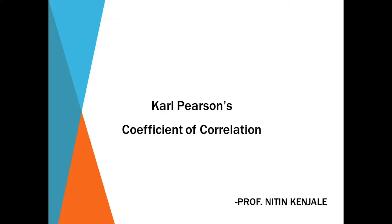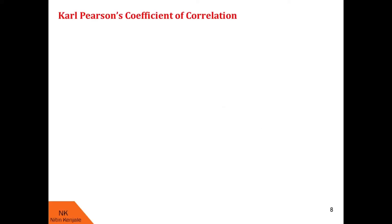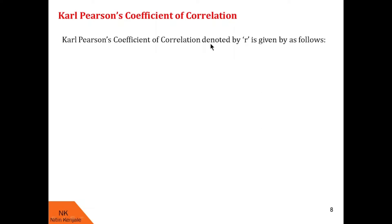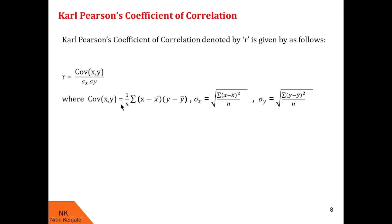Let us first see the formula to find the coefficient of correlation using this method. Karl Pearson's coefficient of correlation is usually denoted by small letter r and is given by the formula: covariance of x, y divided by sigma x into sigma y. Covariance of x, y is given by 1 by n into summation of x minus x bar into y minus y bar, where n denotes the number of data values, x bar and y bar denote respectively the average of values of x and y. Sigma x denotes the standard deviation of values of x and is given by the square root of summation of x minus x bar whole square upon n.